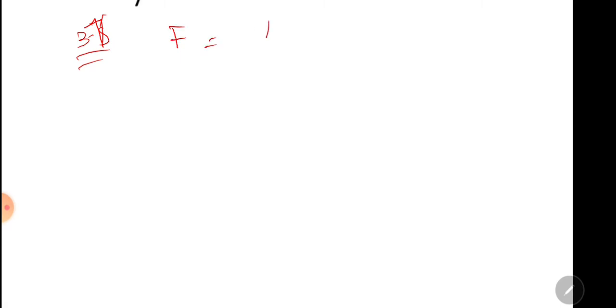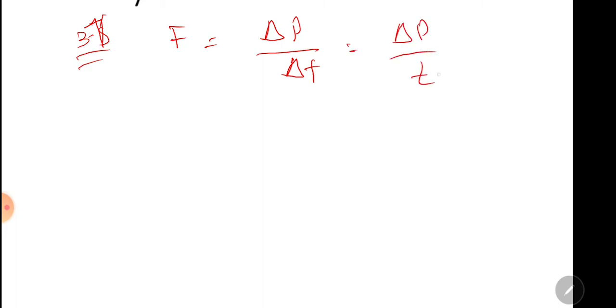Question 3.7: how can you relate momentum and force? We have to derive this relation. You can write Δp divided by t. A body has an initial velocity.